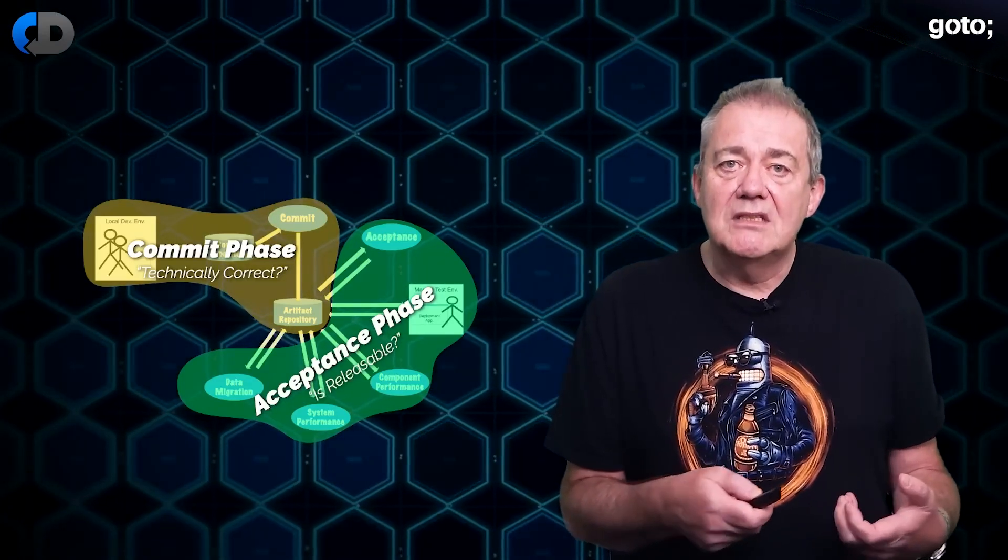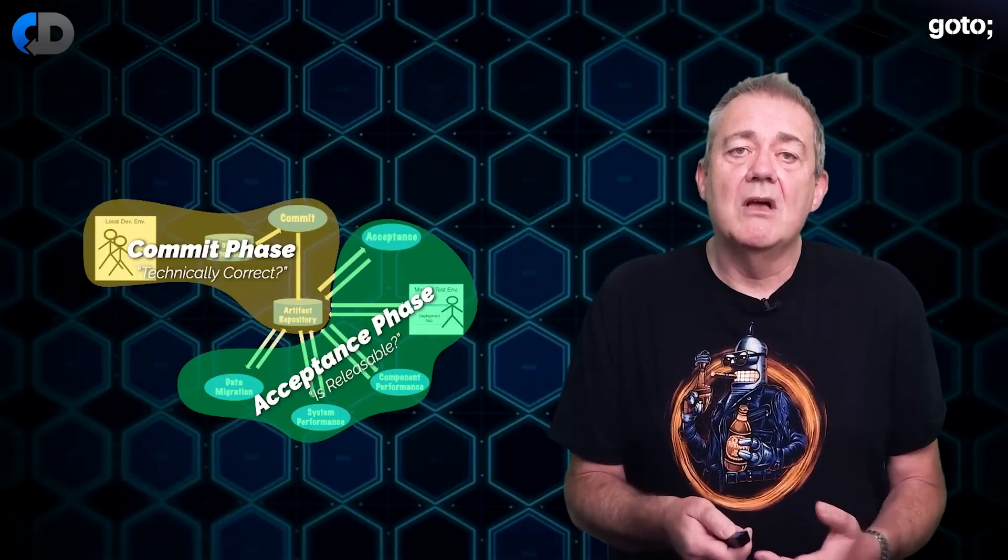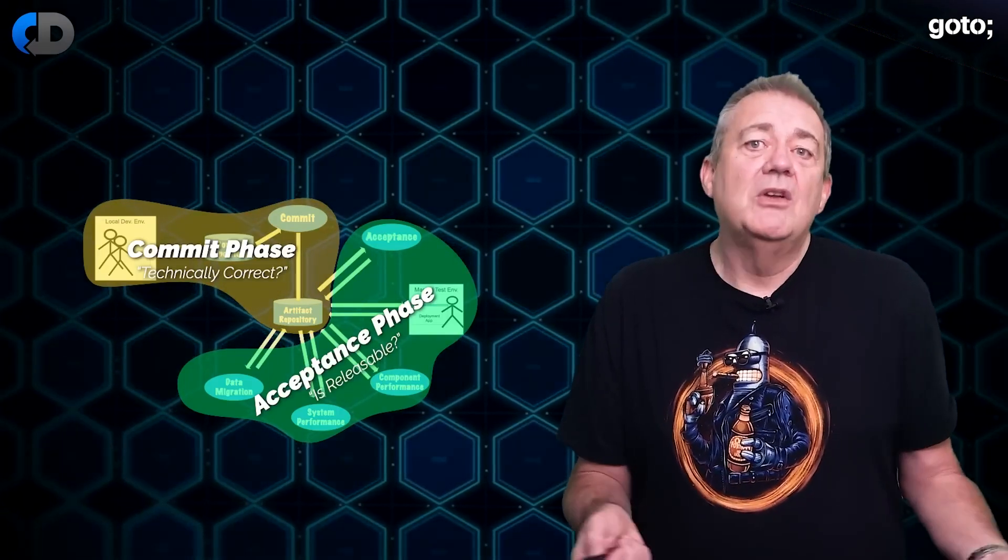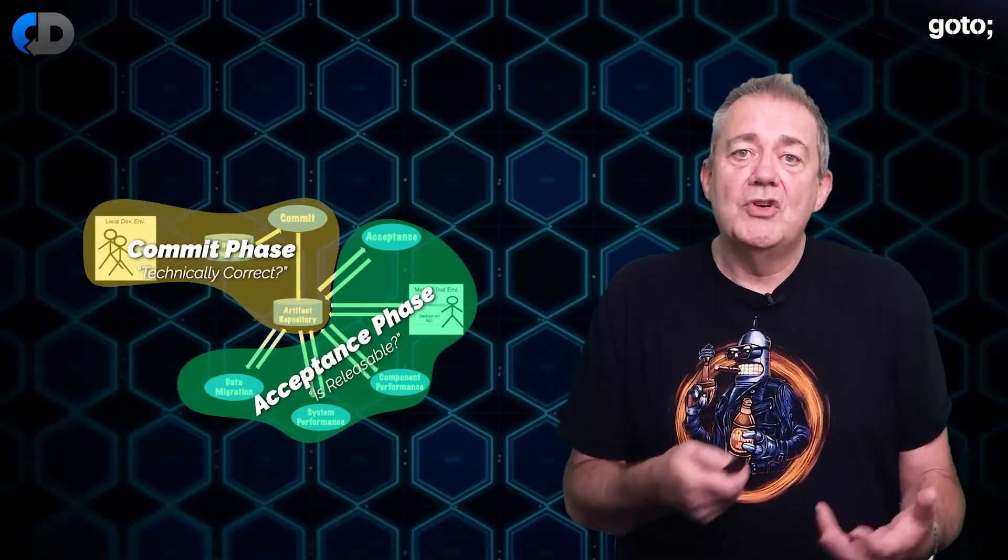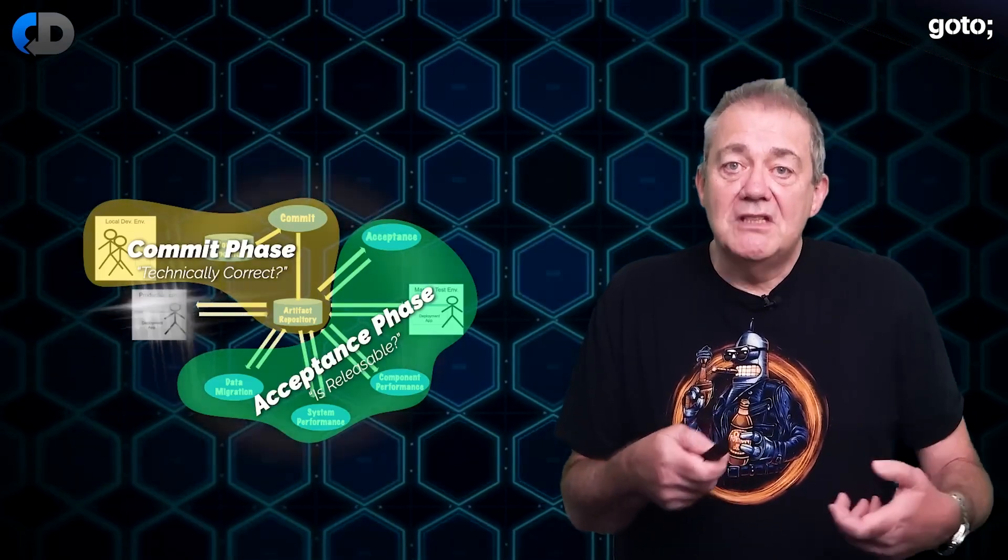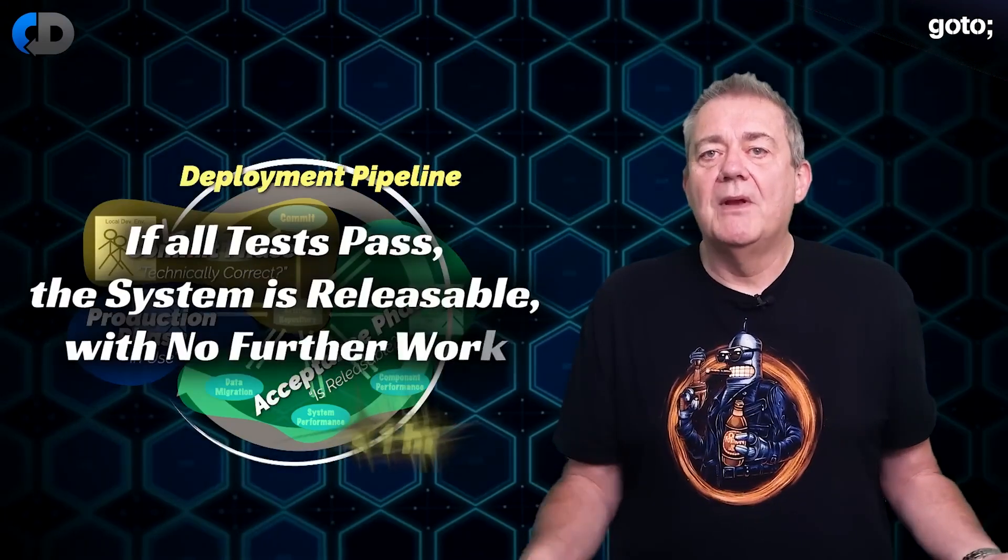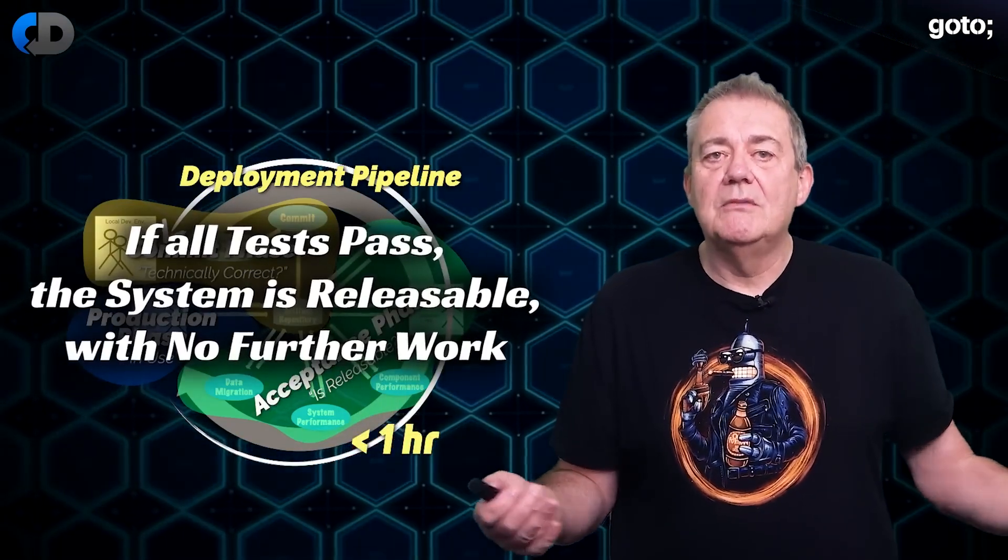We may also want to test the security of our system its performance resilience or regulatory compliance and so on. To ensure that we get fast accurate feedback we can automate all of these things in our deployment pipeline and treat it as being definitive for determining the releasability of our system. That is if all of the tests in the pipeline pass there's no more work to do before we're happy to release this change into production.